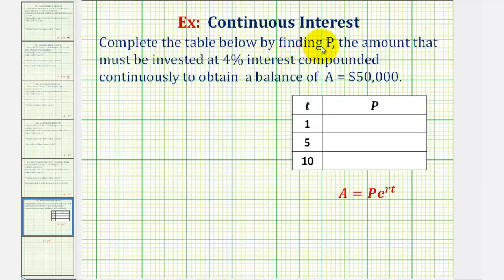We want to complete the table below by finding P, the amount that must be invested at 4% interest compounded continuously to obtain a balance of A equals $50,000.